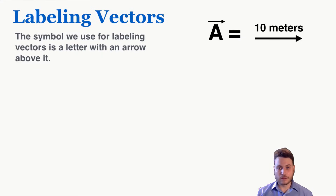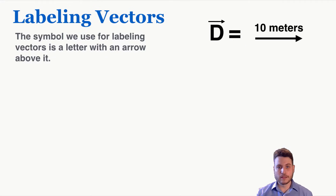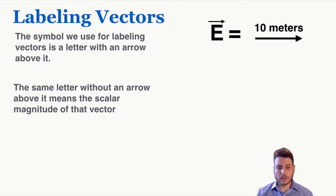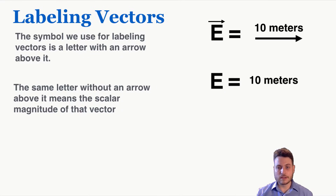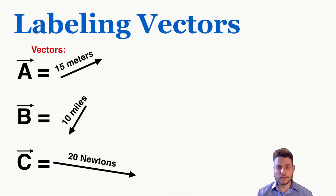So this is vector A. Vector A is equal to 10 meters to the right, and it's totally arbitrary which letter we use for which vector, as long as we're using a letter with an arrow above it as the variable. The same letter without an arrow above it means the scalar magnitude of that vector. So if E with an arrow means 10 meters to the right, E by itself just means 10 meters — that's the notation we use.